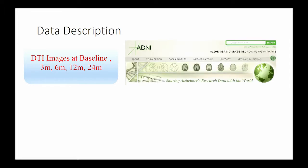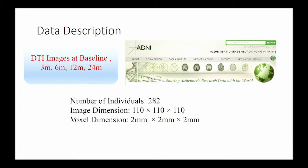We download the data from the ADNI dataset. In total, after data cleaning, we have 228 individuals. A single image dimension is 110 by 110 by 110, and each voxel size is about a two millimeter cube.